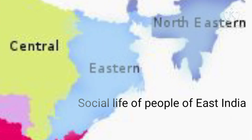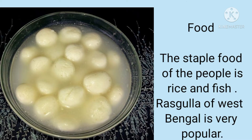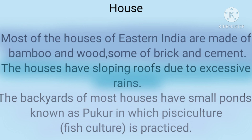Social life of people of East India: Food — the staple food is rice and fish. Rasgulla of West Bengal is very popular. House: Most of the houses of Eastern India are made up of bamboo and wood, some of brick and cement. The houses have sloping roofs due to excessive rains. The backyards of most houses have small ponds known as pukur, in which pisciculture — fish culture — is practiced.